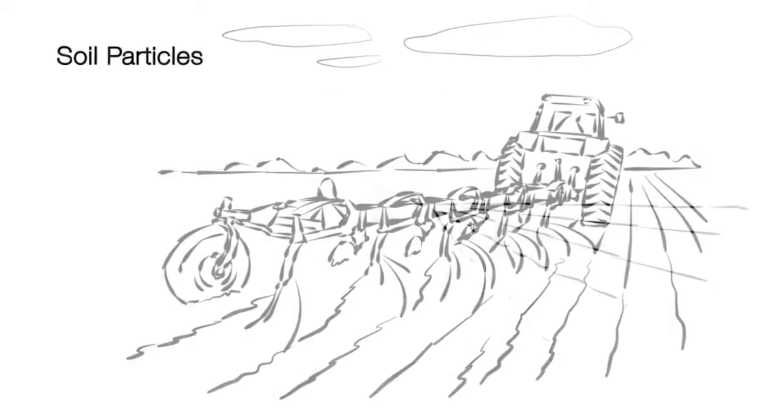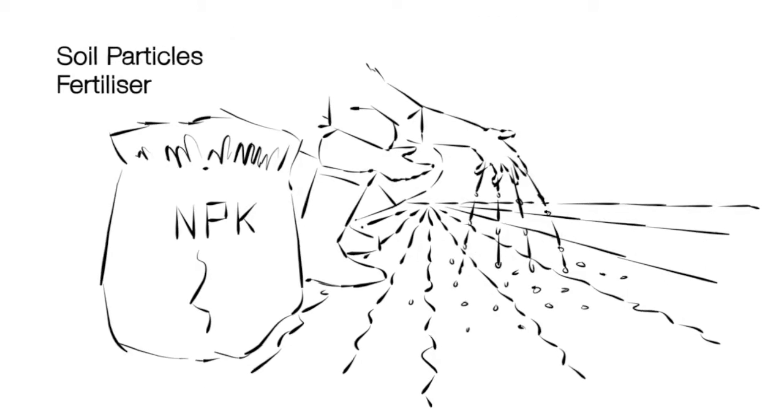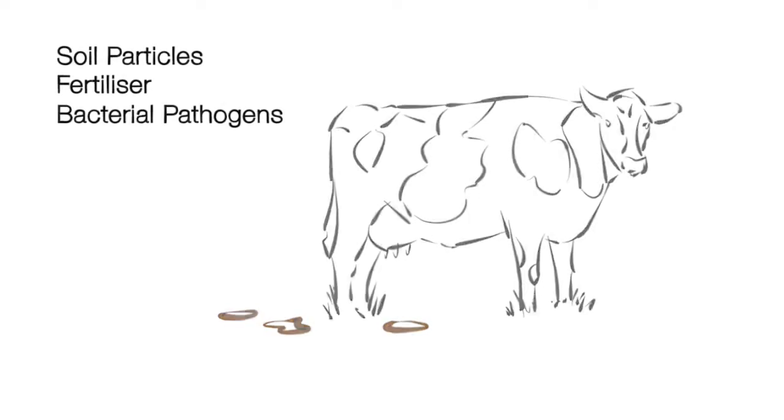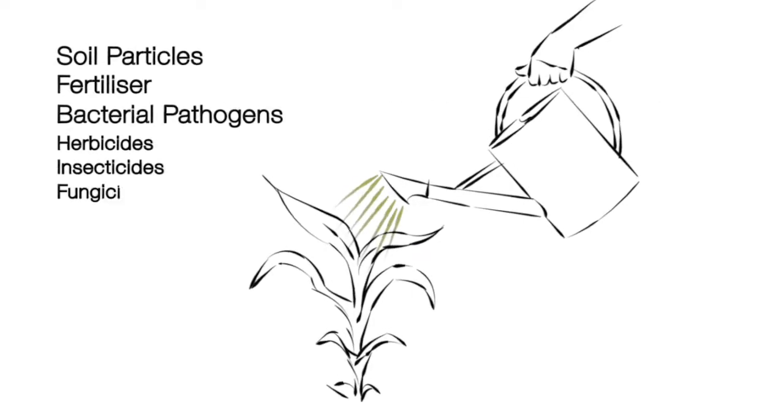This pollution comprises soil particles from ploughing, unused organic and artificial fertiliser, bacterial pathogens from animal waste, and pesticides, including herbicides, insecticides and fungicides.